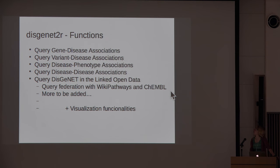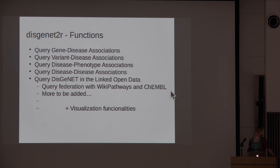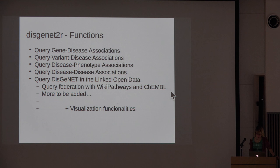Functions in this package include querying gene-disease associations, variant-disease associations, and disease-phenotype associations — we implemented these from the Human Phenotype Ontology project. You can also query disease-disease associations, and expand DisGeNET through other linked open data resources by query federation. We have implemented functions that query DisGeNET with WikiPathways and ChEMBL. More functions can be added, for example during the biohackathon. These functions are accompanied by visualization functionalities.